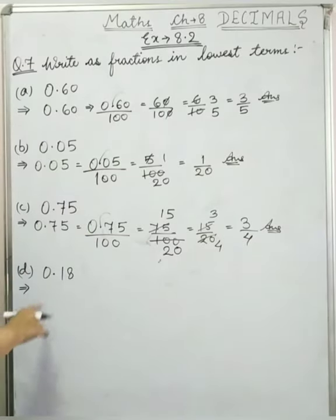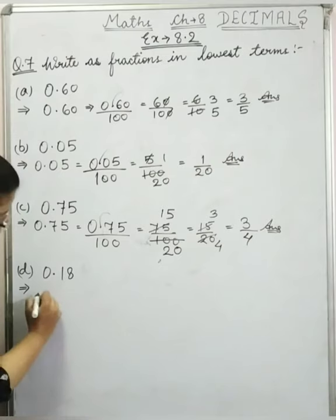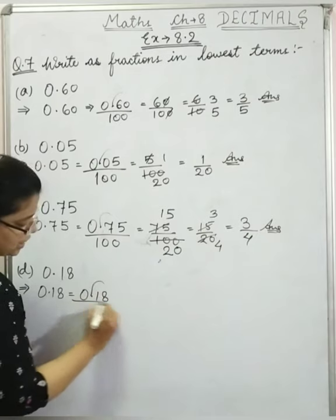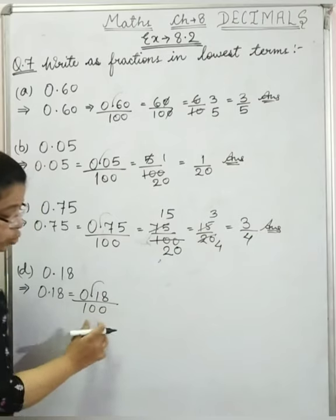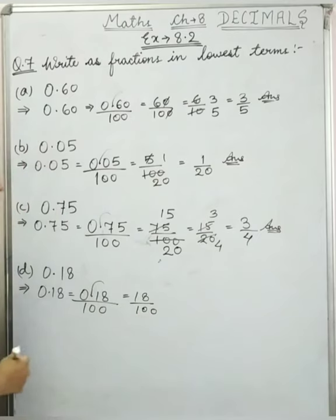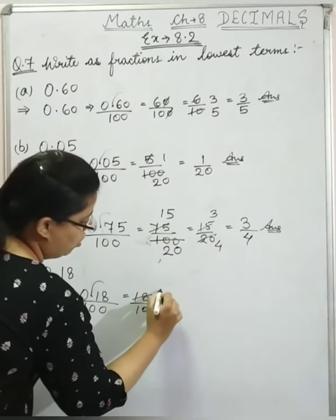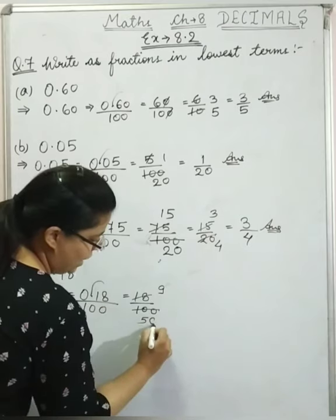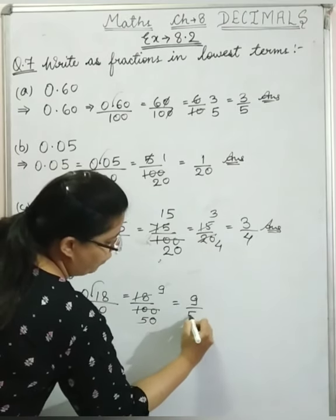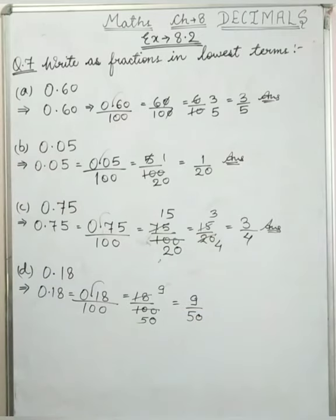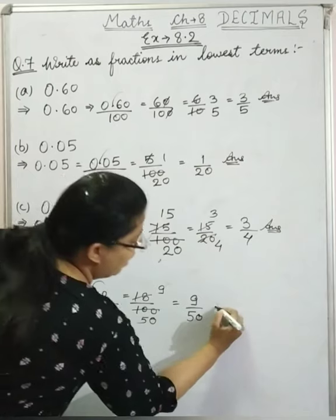Now next is d: 0.18. We remove the decimal; after the decimal there are 2 digits, so 2 zeros in the denominator: 18 upon 100. This can be reduced using the 2 times table: dividing both by 2 gives 9 upon 50. Since no common factor remains, 9 upon 50 is the answer.